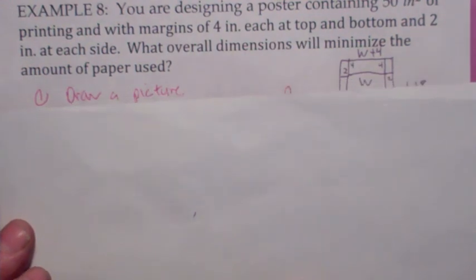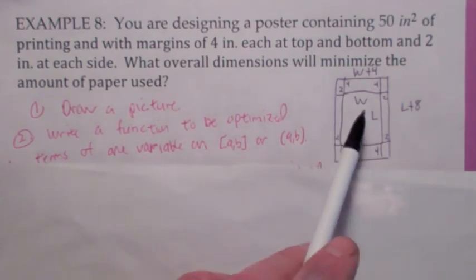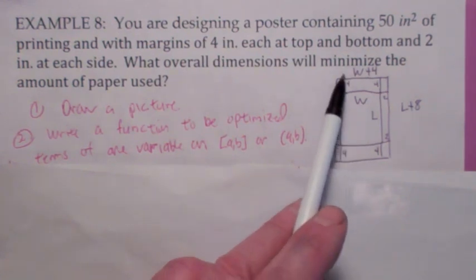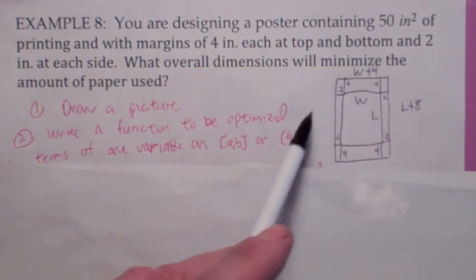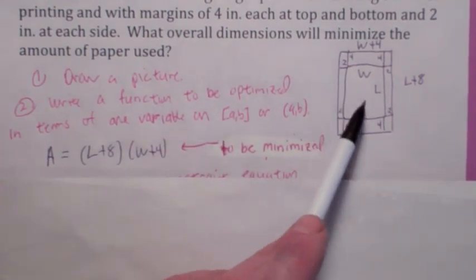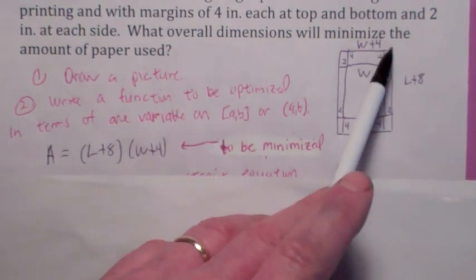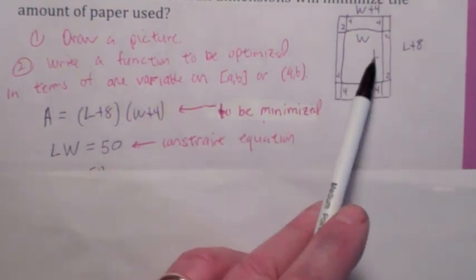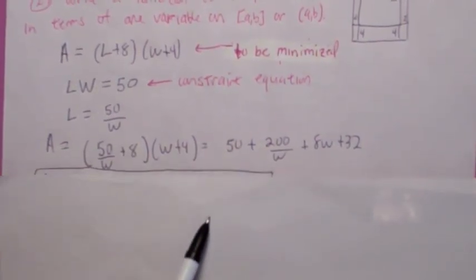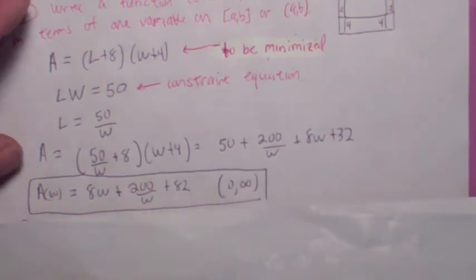You're designing a poster where the printed area must be 50 square inches. Let w be the width and l be the length of the printed area, so w times l equals 50. With 2-inch margins on each side, the total paper width is w plus 4. With 4-inch margins on top and bottom, the total paper length is l plus 8. We want to minimize the total paper area A equals (l plus 8) times (w plus 4). Solving the constraint for l gives 50 over w, and substituting gives the function to minimize. This is an open interval problem because w cannot equal zero and there is no largest allowable value, so we use the first derivative test.